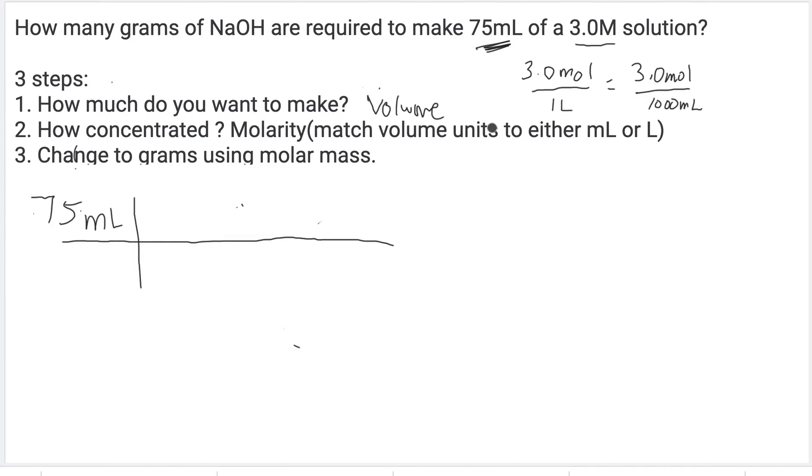You need to match the volume units to what you start with. So we write it as 3.0 moles of NaOH for every 1000 milliliters to match our volume units. That's how concentrated we want to make it.